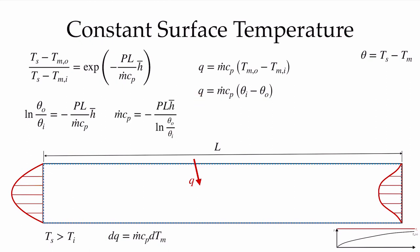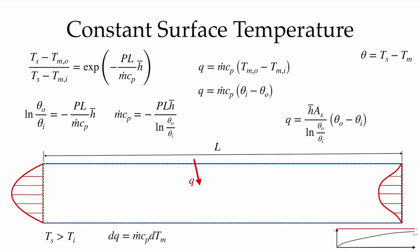The result starts to look very much like Newton's law of cooling. Since P times L is our surface area A_s, we can write Q in that form. Rearranging to eliminate the negative sign and expressing in terms of A_s, we have Q = h-bar · A_s times a temperature difference — an average convection coefficient times the surface area times a driving temperature difference that accounts for the varying surface-to-mixed-mean temperature difference along the pipe.